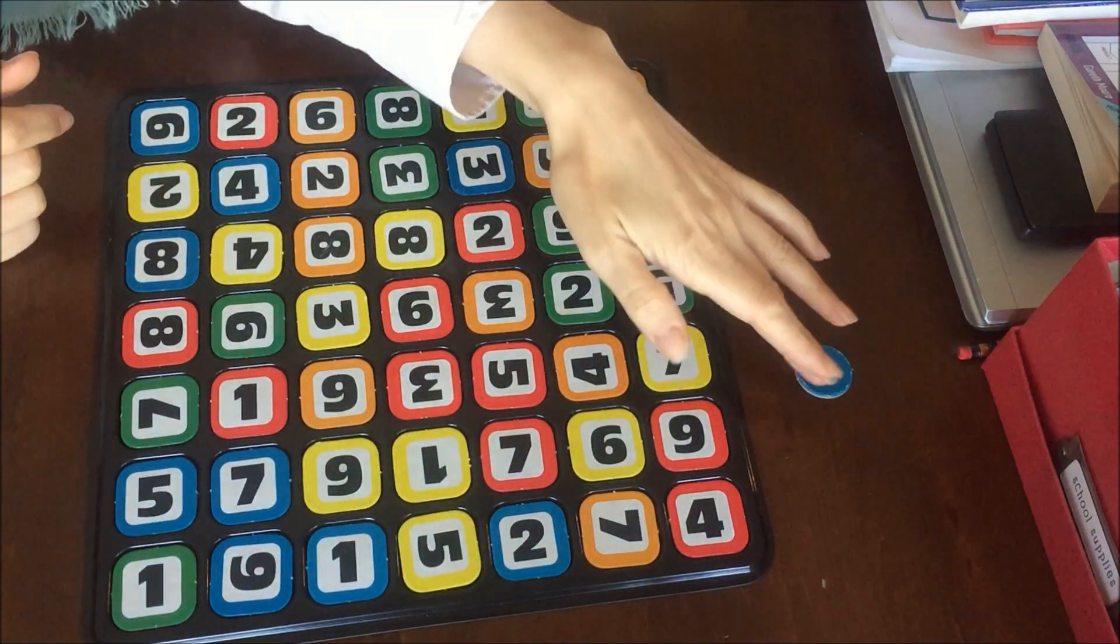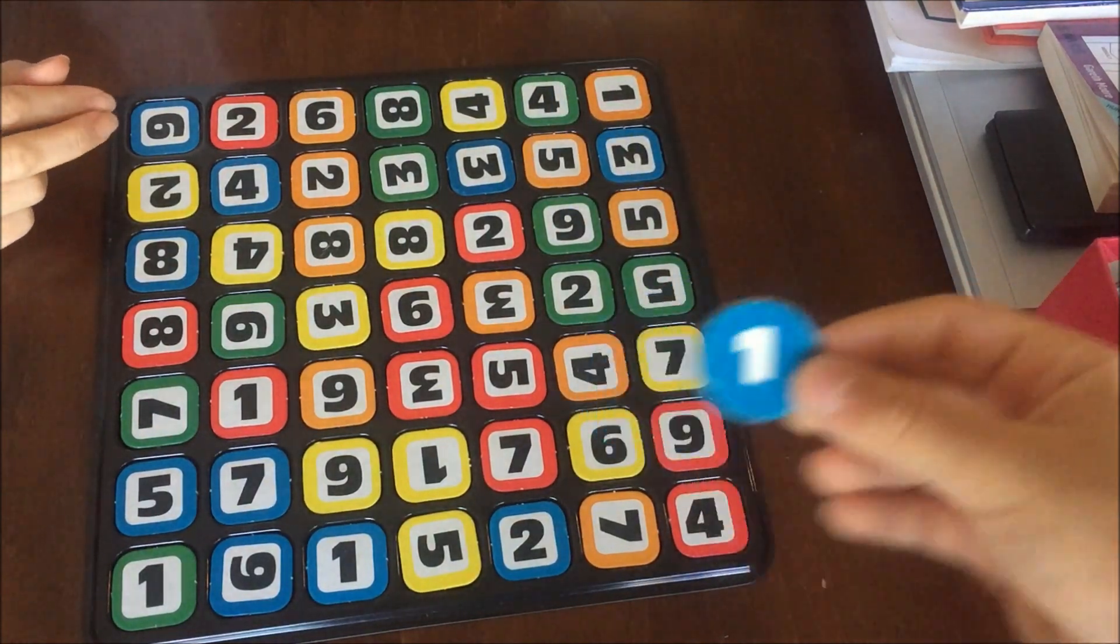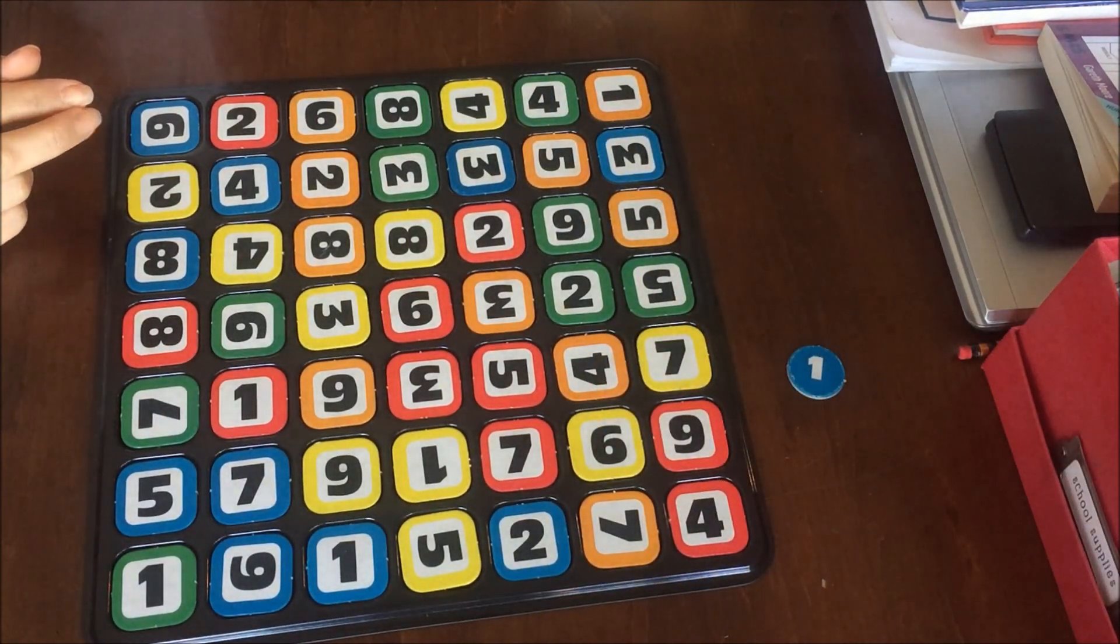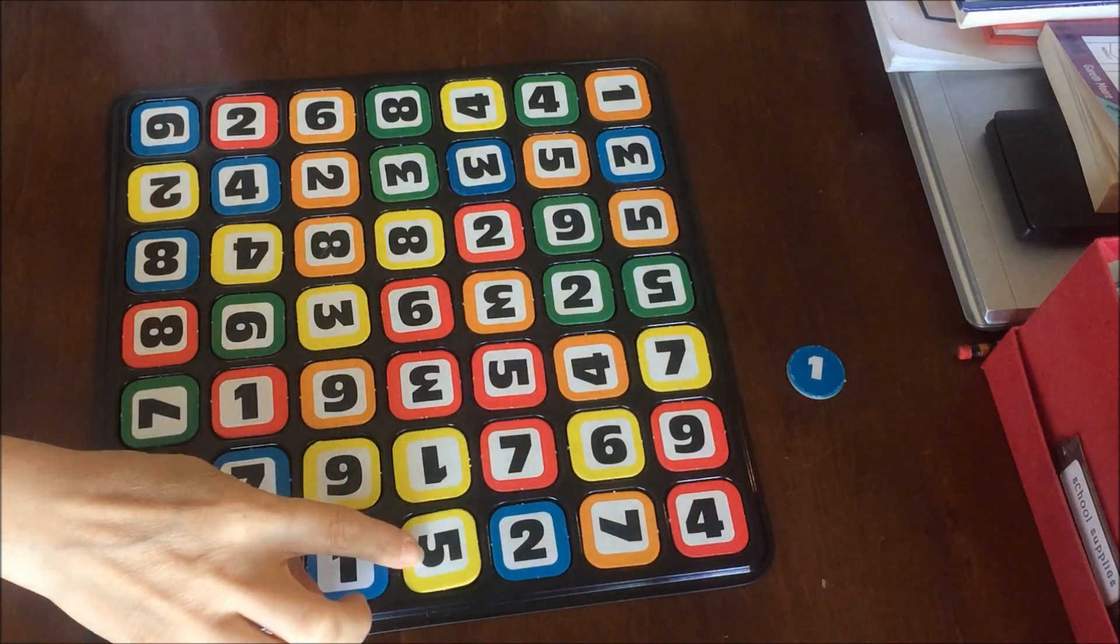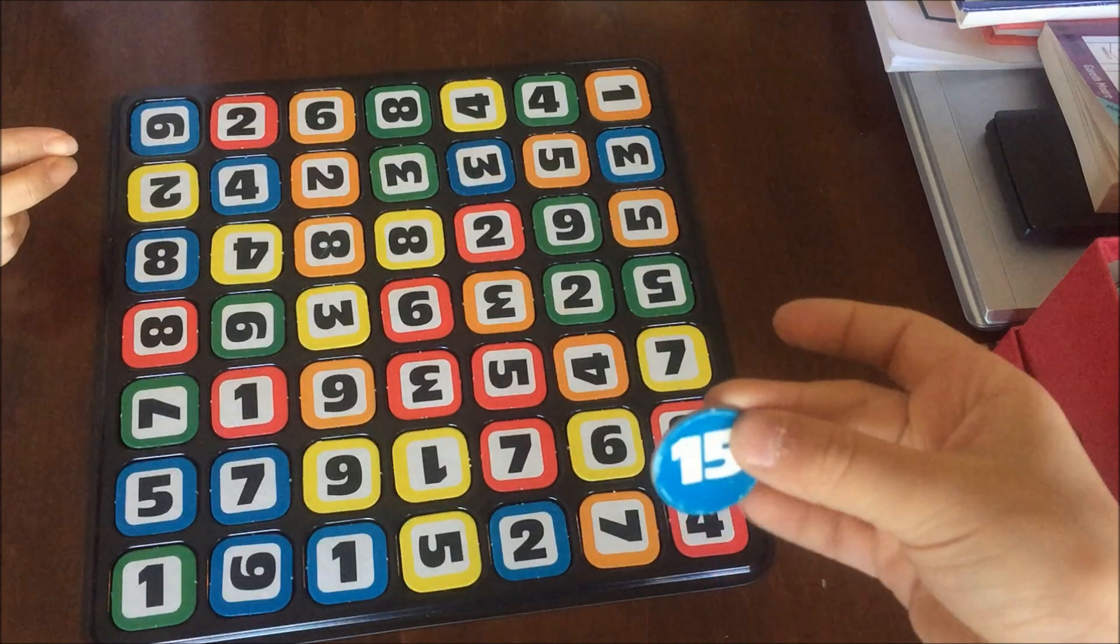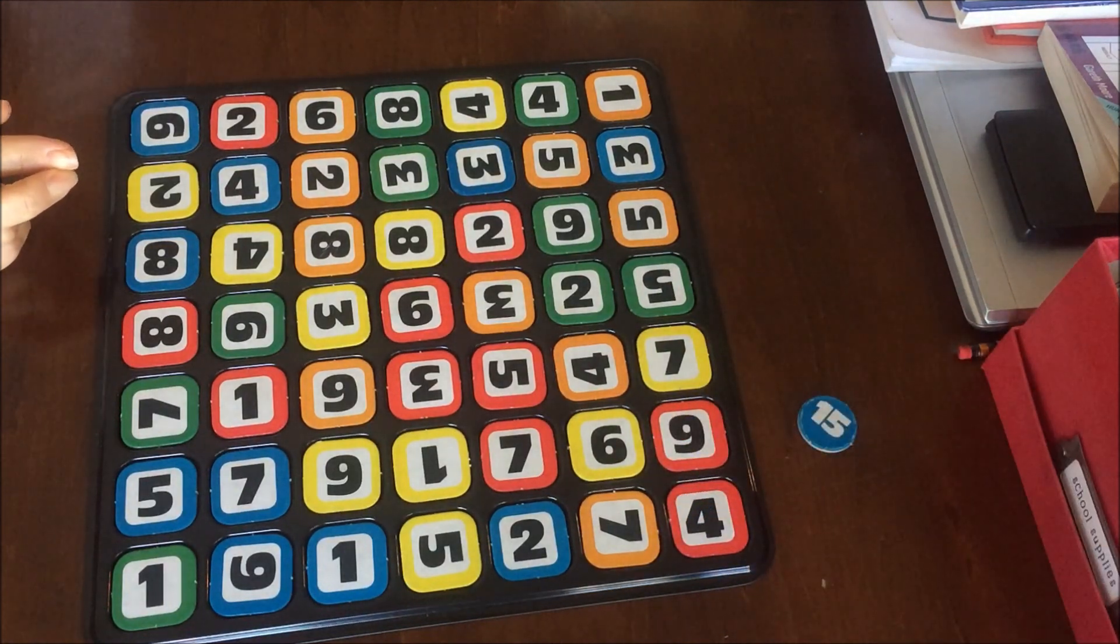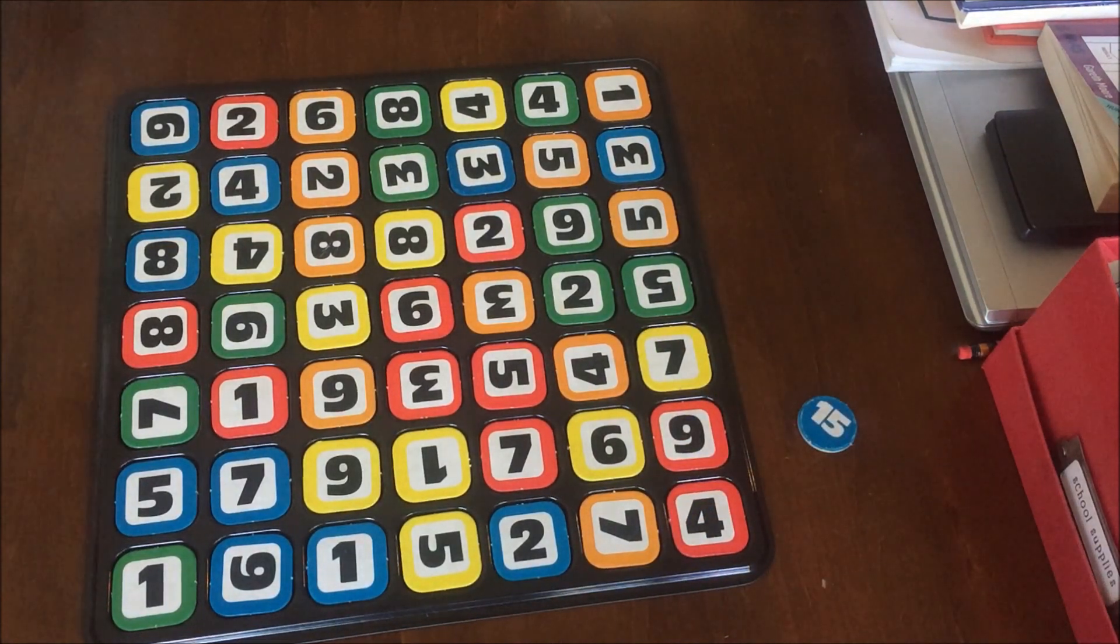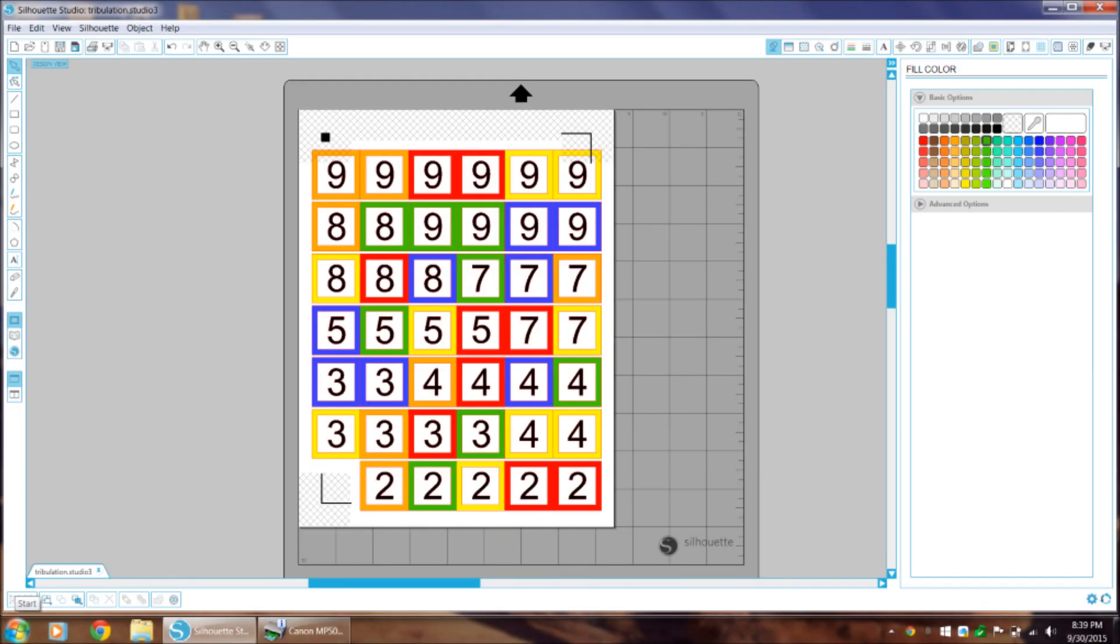So we have 1 times 5 makes 5, plus 2 is 7. And now we're looking for 1, and that's 1 times 6 minus 5, and that makes 1. So 15. Sometimes this game goes really fast, and other times we just really get stuck.